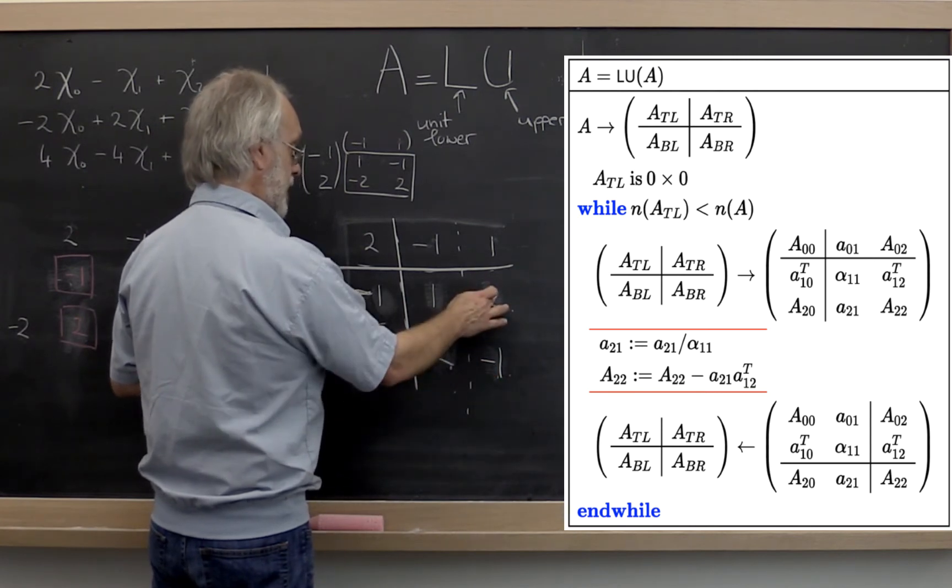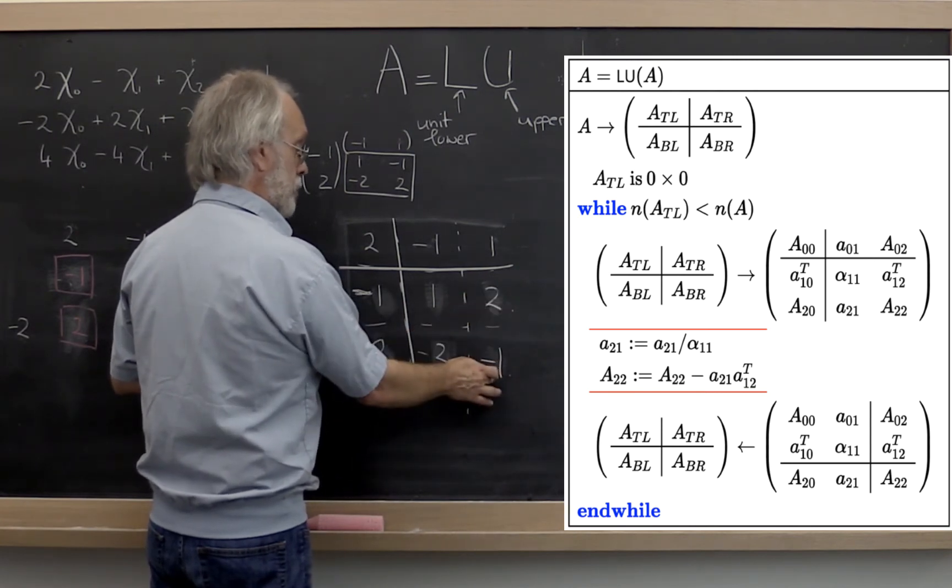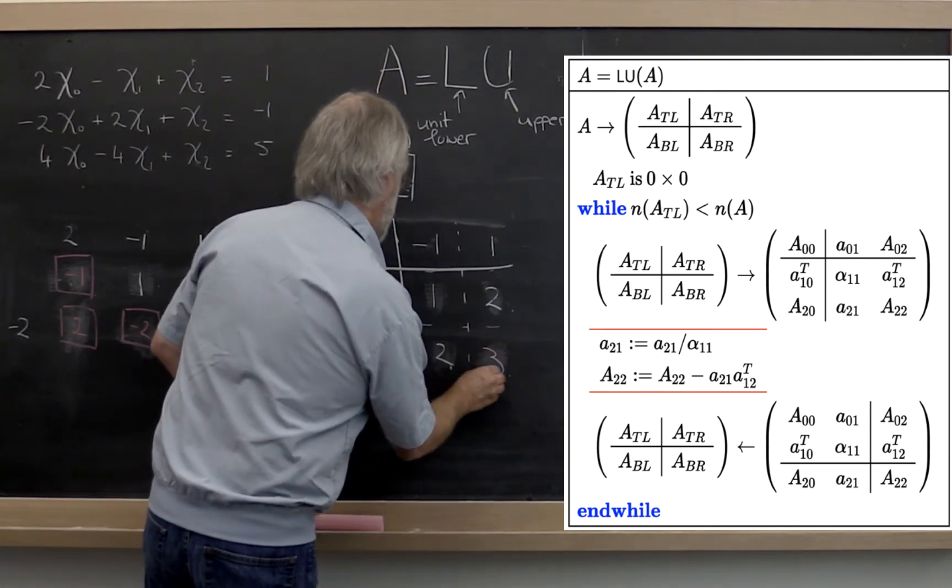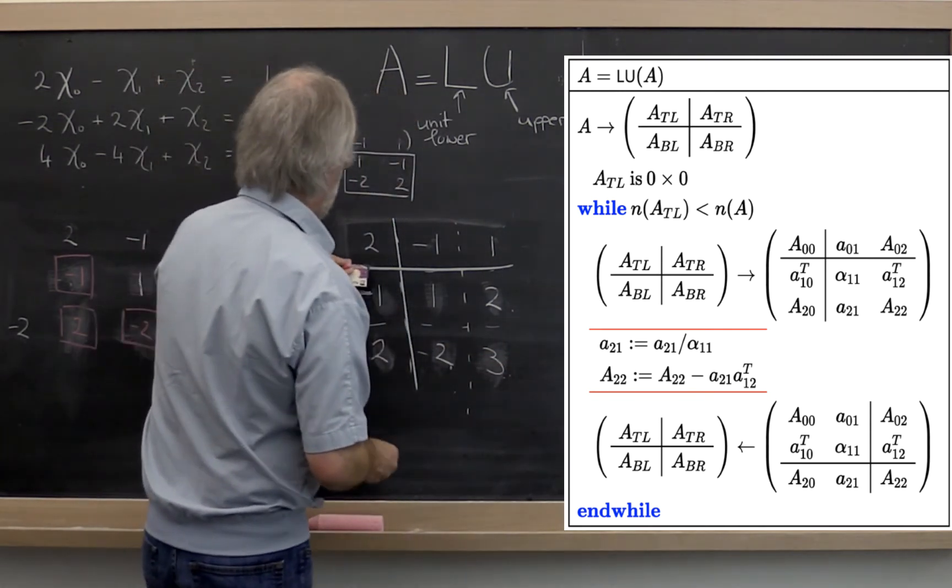Then it tells you to do this times that and subtract that off of that. Now this times that is minus 4, subtracting that off of that gives you a 3. Then it tells you to move forward.